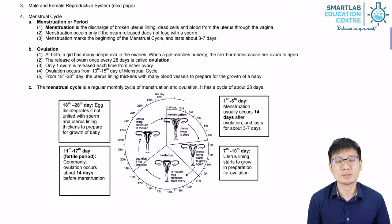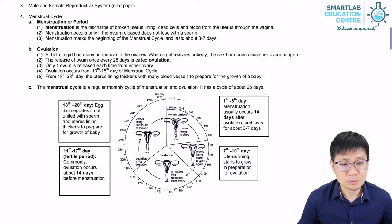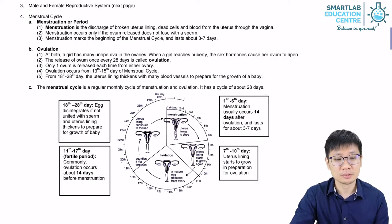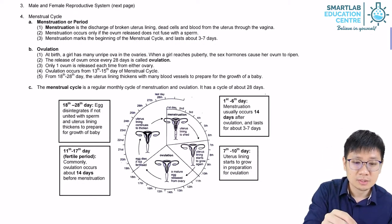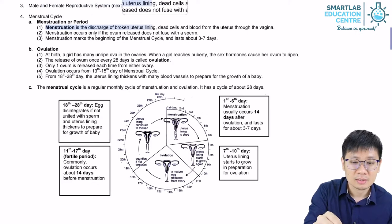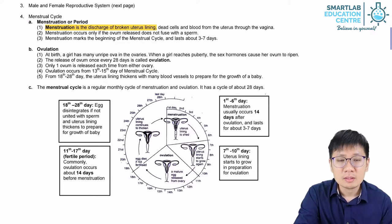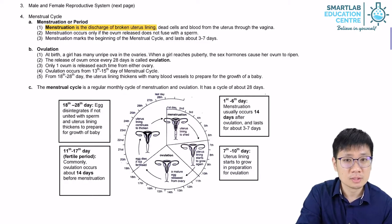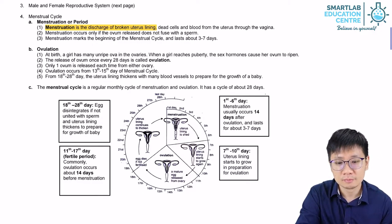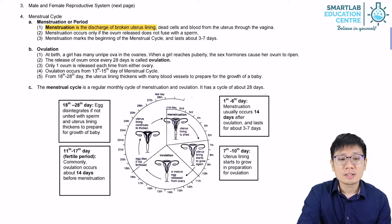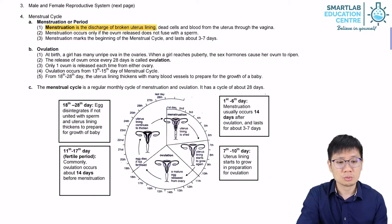We're going to talk about menstruation and menstrual cycle in further detail. Let's begin with an introduction to menstruation. Menstruation is the discharge of broken uterine lining. The broken uterine lining consists of mostly dead cells from the uterine lining itself, contains blood, and also unfertilized egg cells — of which there should only be one. Menstruation is a natural process that starts during puberty; in fact, it's taken to be the signal where puberty begins in a female.